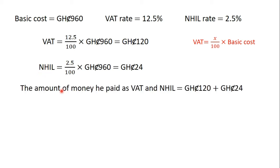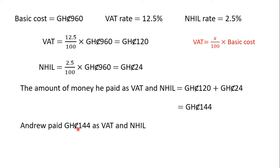The amount of money he paid as VAT and NHIL is equal to 120 Ghana cedis plus 24 Ghana cedis, which is 144 Ghana cedis. So, Andrew paid 144 Ghana cedis as VAT and NHIL.